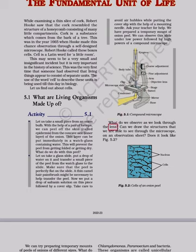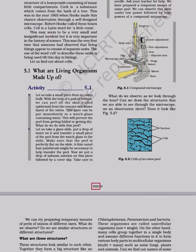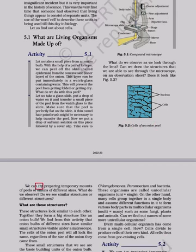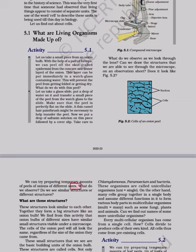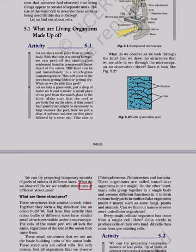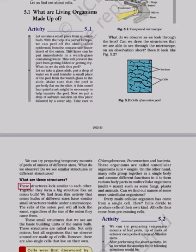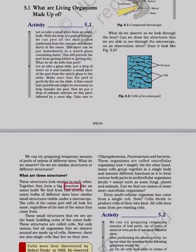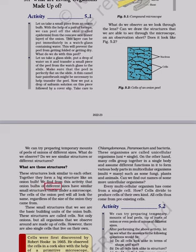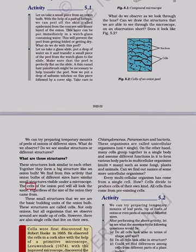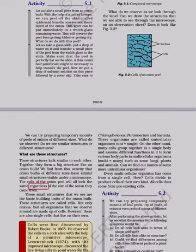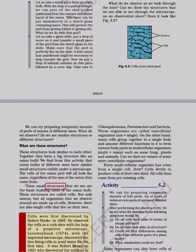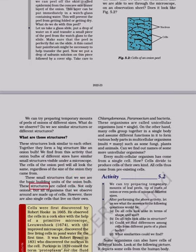What do we observe as we look through the lens? Can we draw the structures that we are able to see through the microscope on an observation sheet? Does it look like Figure 5.2 — cells of an onion peel? We can try preparing temporary mounts of peels of onions of different sizes. Do we see similar structures or different structures? These structures look similar to each other. Together they form a big structure like an onion bulb. We find from this activity that onion bulbs of different sizes have similar small structures visible under a microscope. The cells of the onion peel will all look the same regardless of the size of the onion they came from. These small structures that we see are the basic building units of the onion bulb. These structures are called cells.